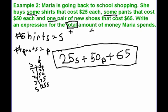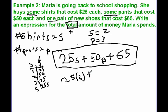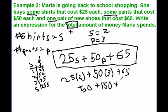This expression models our paragraph. For example, if Maria buys two shirts and three pairs of pants, we plug those values in: 25 times 2 plus 50 times 3 plus 65. 25 times 2 is 50, 50 times 3 is 150, and 65 is just 65. Adding them all up: 50 and 150 gives 200, plus 65 tells us Maria is spending $265.